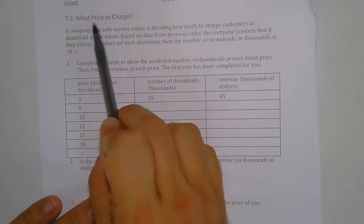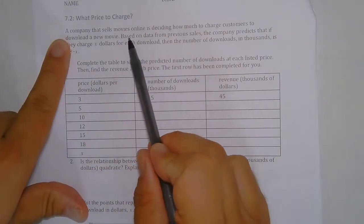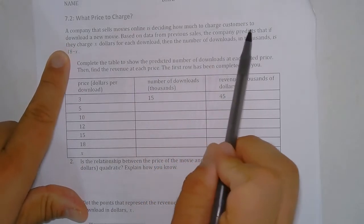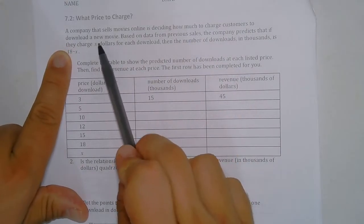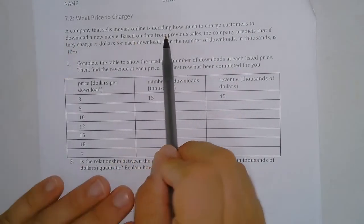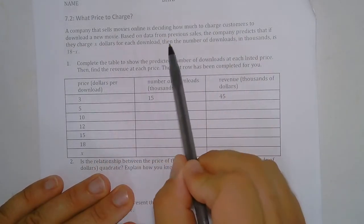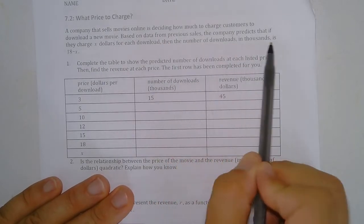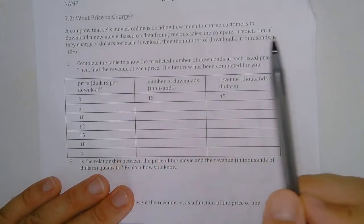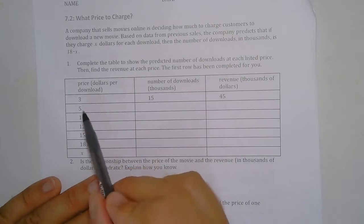So our second task is what price to charge. A company that sells movies online is deciding how much to charge customers to download a new movie. Based on the data from previous sales, the company predicts that if they charge x dollars for each download, then the number of downloads in thousands is 18 minus x.